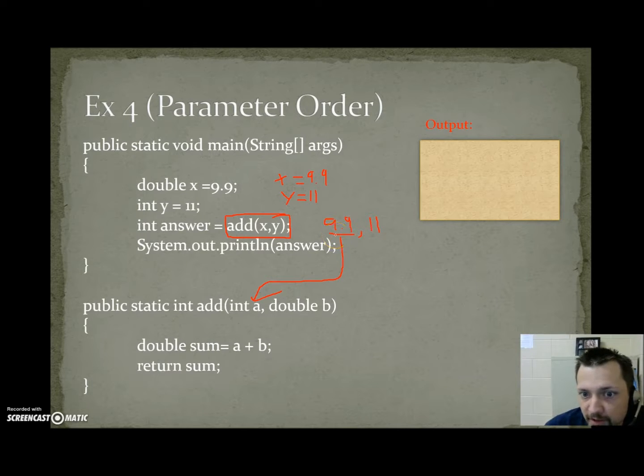So if a method wanted a string, then an int, and you send it an int, then a string, you're sending it what it wants, but in the wrong order, so it cannot find that method. So this one results in error. The code does not compile.